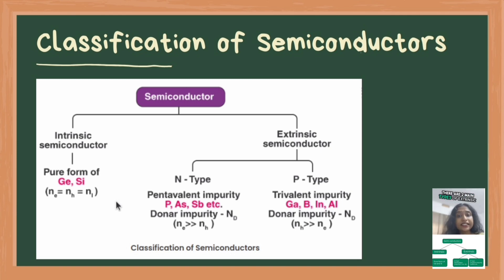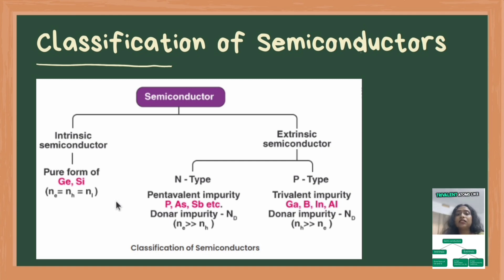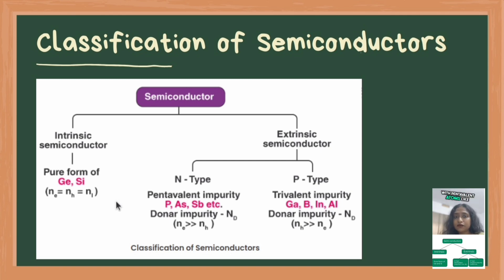There are two main types of extrinsic semiconductors depending on the type of dopant used: N-type semiconductors and P-type semiconductors. In the case of P-type, doping with trivalent atoms like boron, aluminium, etc., creates holes or positive charge carriers as majority carriers. In the case of N-type, doping with pentavalent atoms like phosphorus, arsenic, etc., adds extra electrons as majority carriers, increasing conductivity.